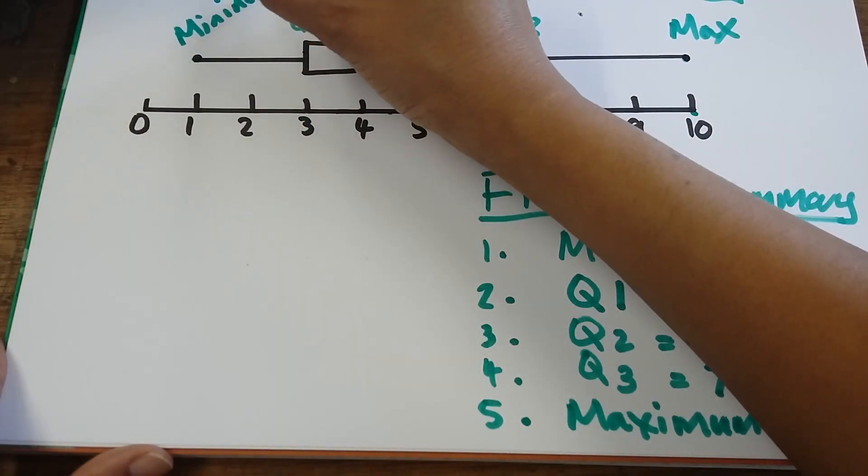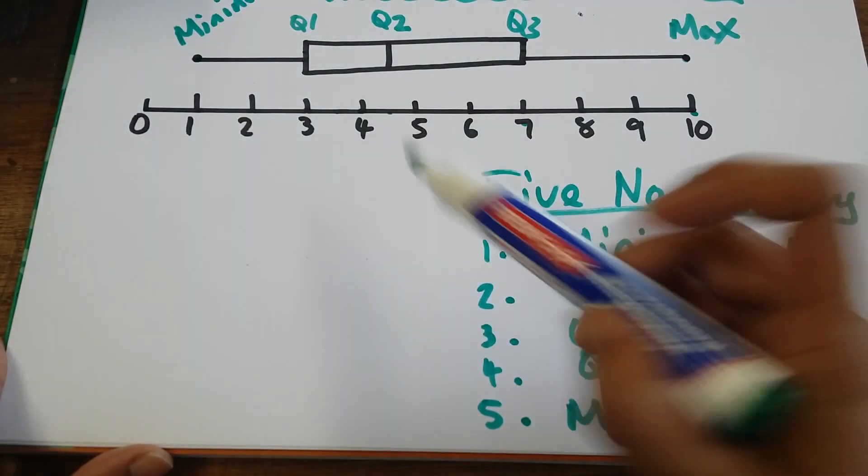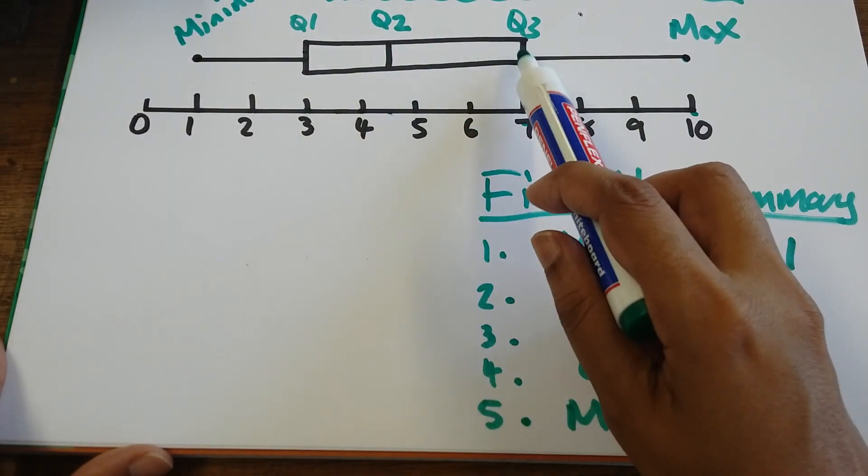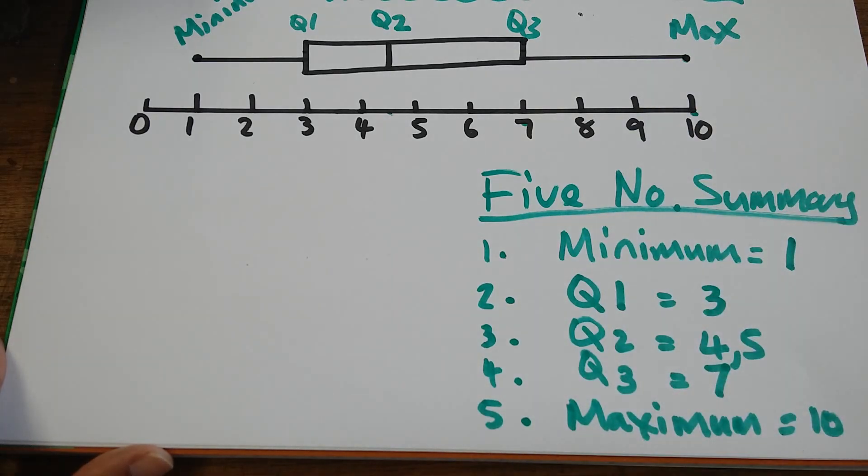To summarize, we start the box and whisker plot with a minimum, then we go in order: Q1, Q2, Q3, and maximum value.